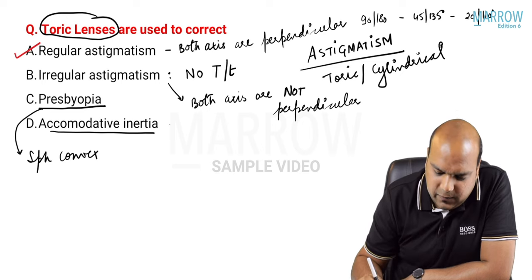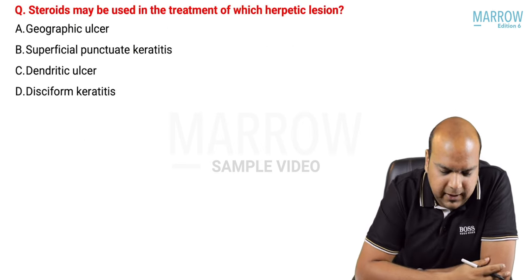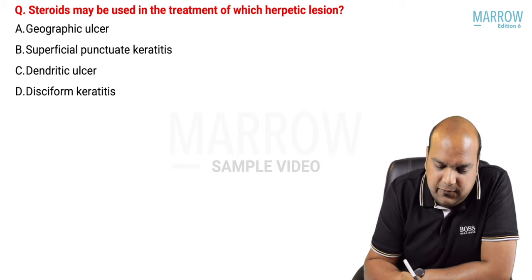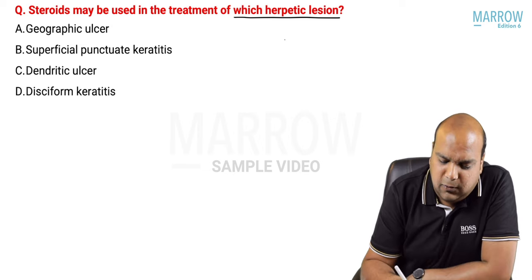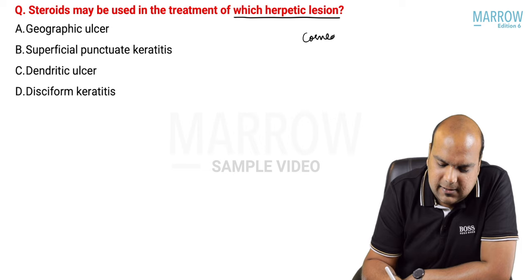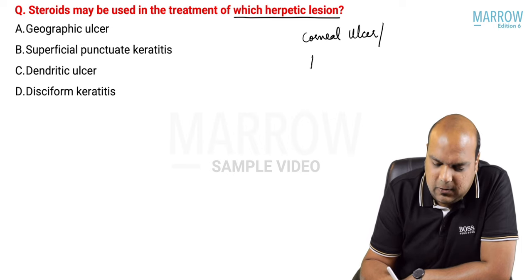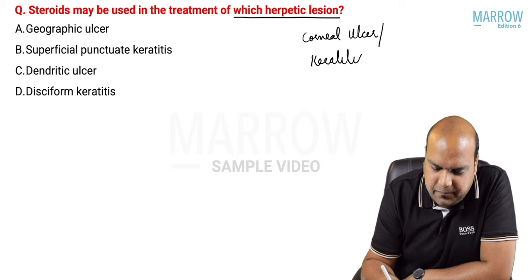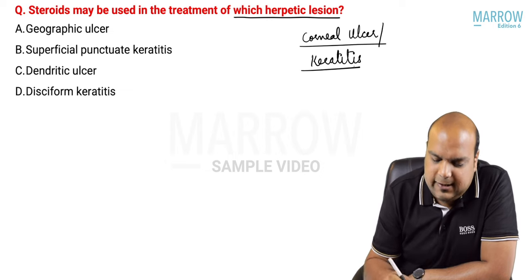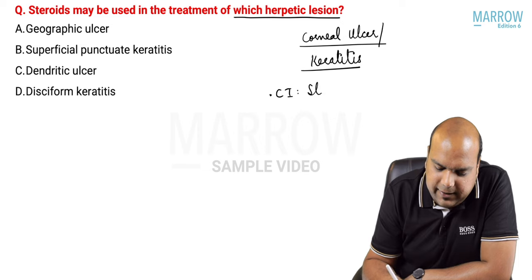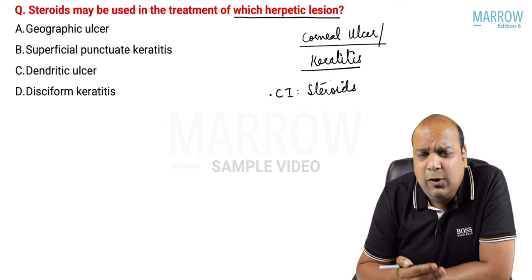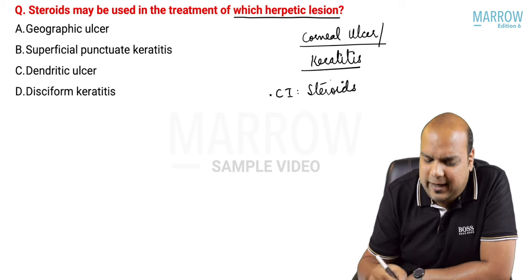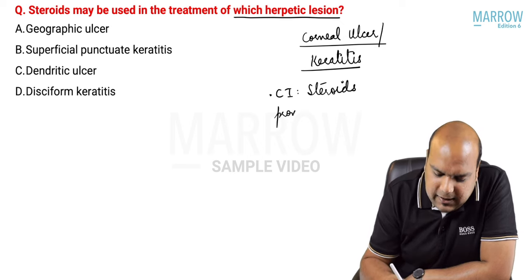Next question: steroids may be used in the treatment of which herpetic lesion? When talking about herpes, we are talking about corneal ulcer or keratitis. Almost everywhere we write 'steroids: contraindicated.' Steroids are contraindicated in almost all types of corneal ulcer or keratitis because they promote epithelial thinning.